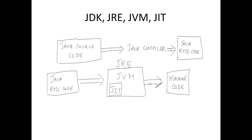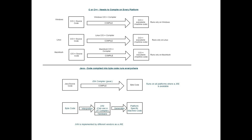You can take the HelloWorld.class file and run it on any platform that has a JRE. The JRE is the vendor-specific implementation of the JVM. The JVM interprets the Java bytecode — it may or may not use the JIT compiler — and produces the machine-dependent code that executes on that platform. The Java bytecode is machine independent; the JRE and machine code are platform dependent. In C or C++, code on Windows must be compiled with the Windows compiler, generating executable code that runs only on Windows.